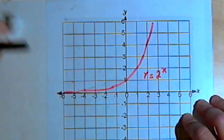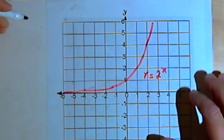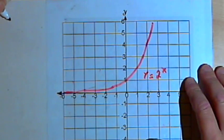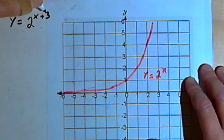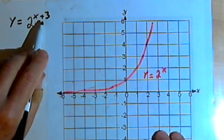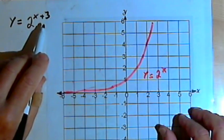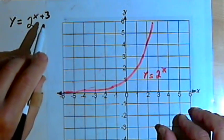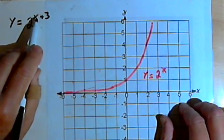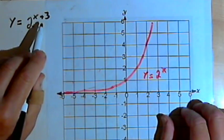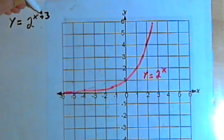So those are the vertical transformations — we can stretch it, flip it, and shift it. We can do horizontal transformations as well. I can take 2 to the x and make it 2 to the x plus 3. What this plus 3 is going to do is shift the graph 3 units to the left. If we add a positive number after the x, it shifts the graph that many units to the left; if we add a negative number to the x, it shifts the graph that many units to the right.